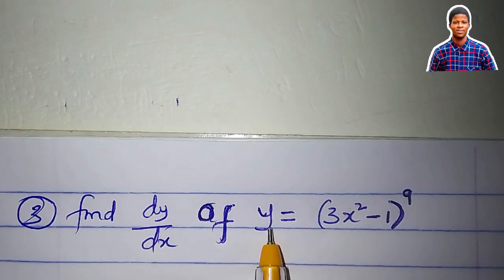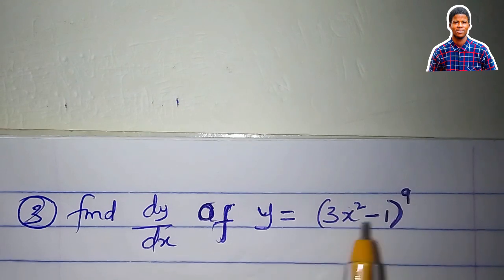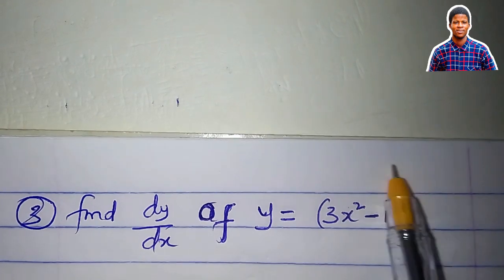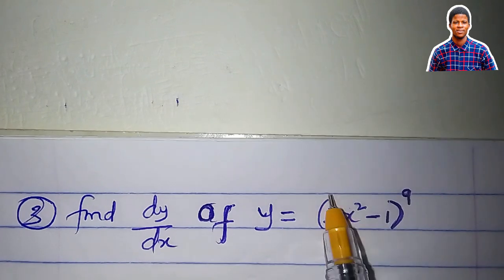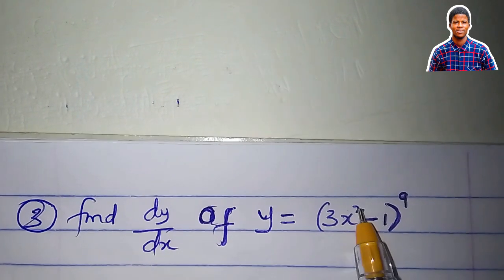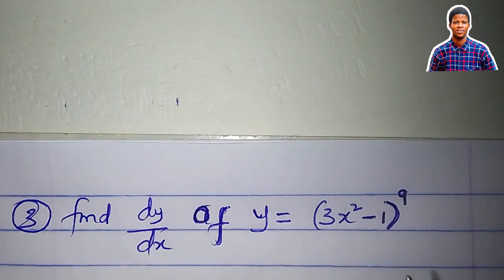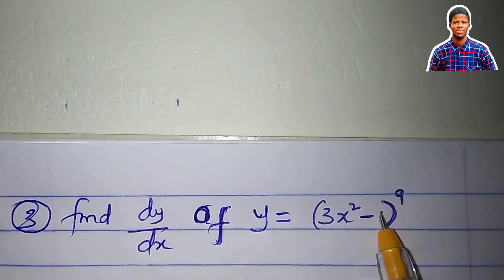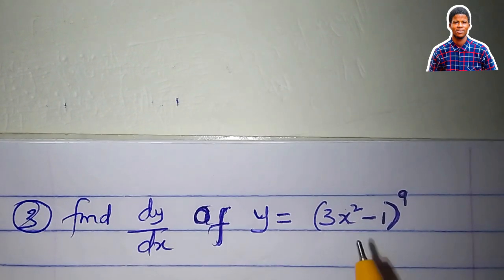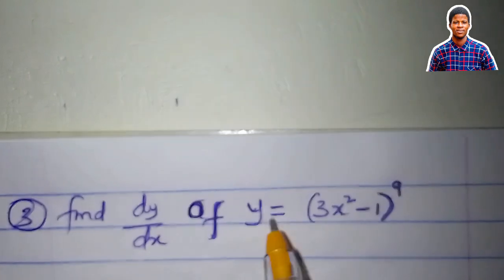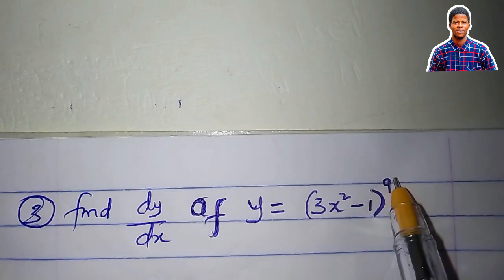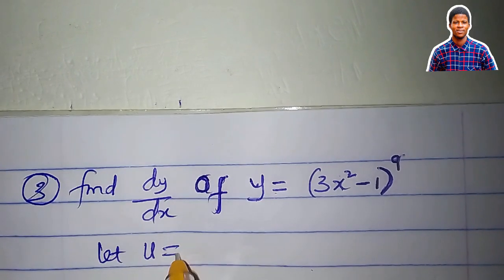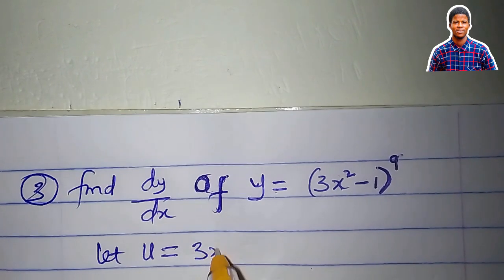Let us find dy/dx of y = (3x² - 1)^9. This is a function of a function because inside this power function we have an algebraic function. Note: the inner function does not always have to be algebraic — it can be trigonometric, logarithmic, or exponential. But here we deal with an algebraic function. The substitution will be: let u = 3x² - 1.